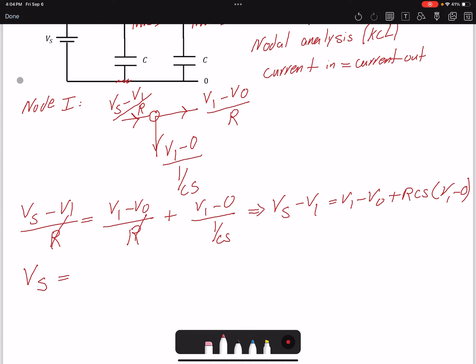If I factor V1, I will have (RCs + 2)V1 minus V0. So I have V1 here that I don't like. I need to remove it and get rid of it. So for now, it's one of my equations, and I will move to node 2.